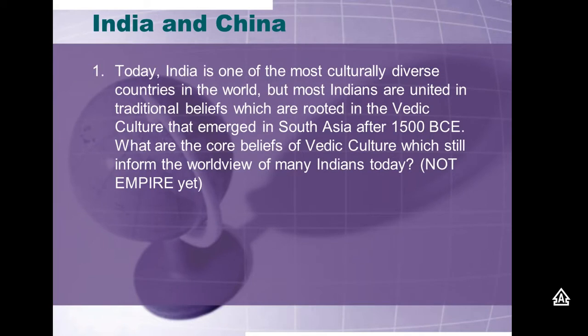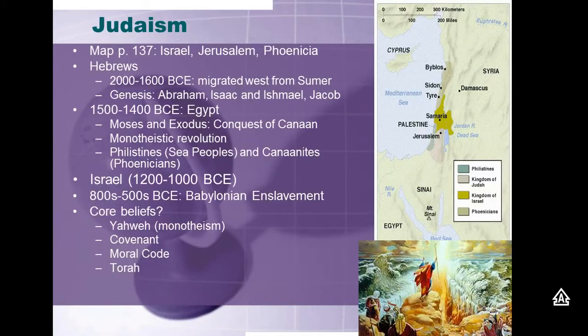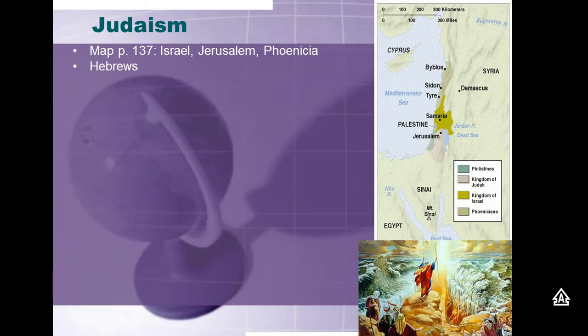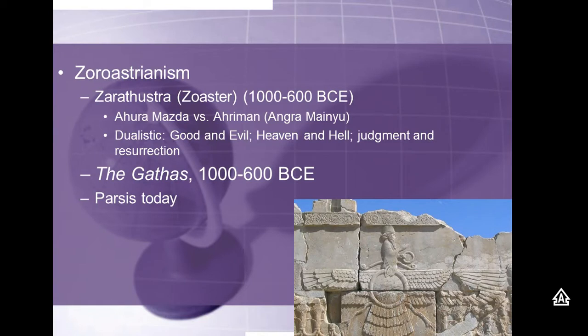Before we move on to India and China, I want to say one more thing about Zoroastrianism. If you skip ahead to Chapter 5, which is assigned for Friday — on Monday I told you to take a look at the document for Zoroastrianism. That's 5.1, on page 190. Write this down under Zoroastrianism in your notes: the Gathas, from the hymns of Zoroaster. I didn't go over what those core beliefs were in that primary source, so you do need to bullet point a few of those.